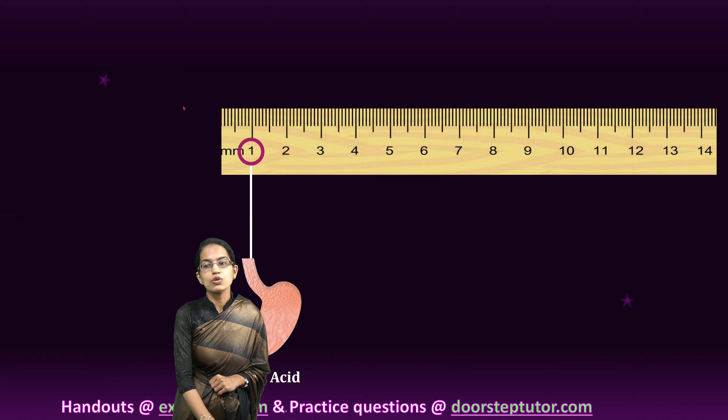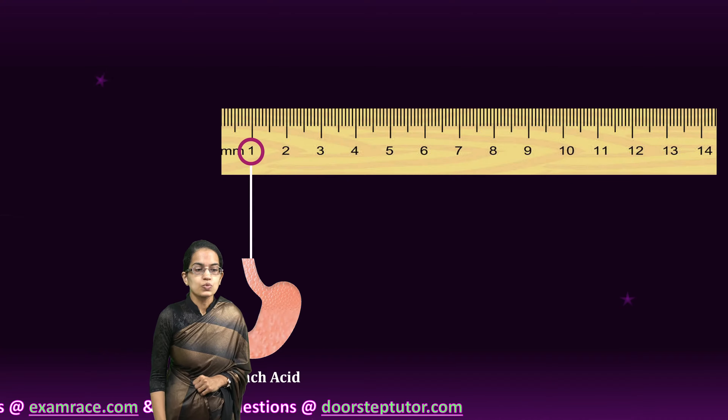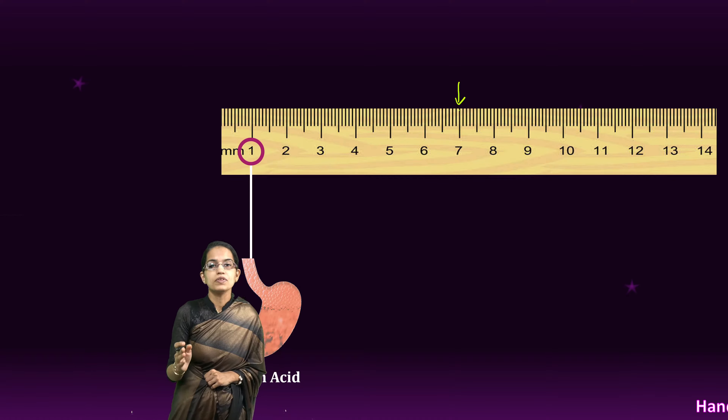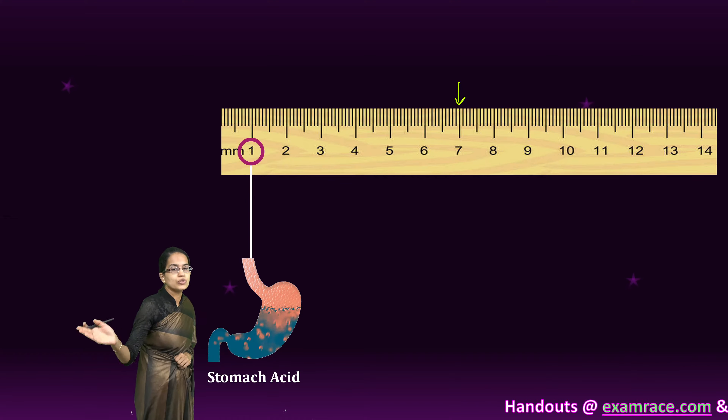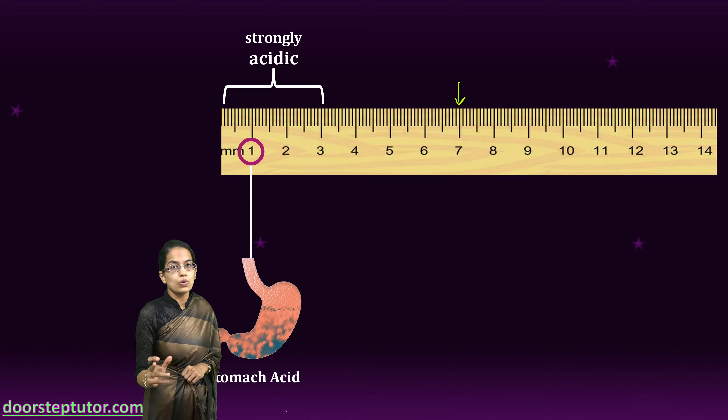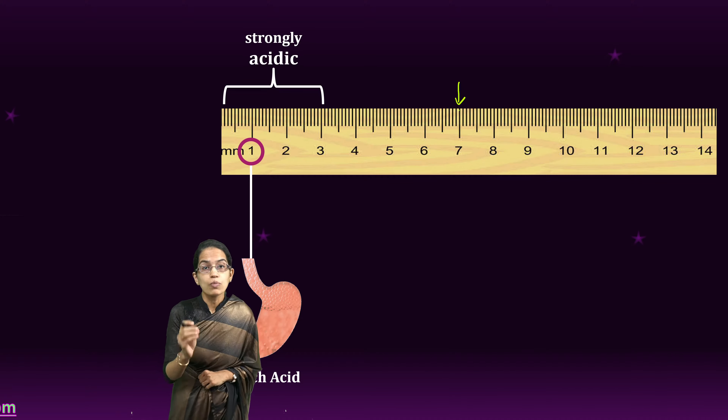The pH of the stomach lies at 1. If we understand the pH scale from 0 to 14, 7 is neutral. Below 7, that is from 0 to 6.9, we would say is acidic, and above 7 is basic or alkaline. Stomach has a pH of 1, which implies that the stomach is highly acidic.